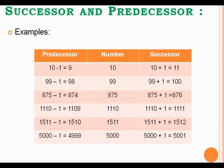Same way in the next example, suppose the given number is 1511. For finding the successor of this particular number, you have to just add 1 to 1511 to get the successor. And subtract 1 from 1511 to get the predecessor of the given number.